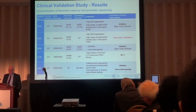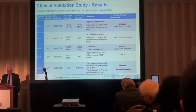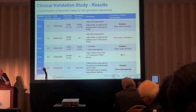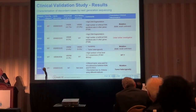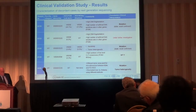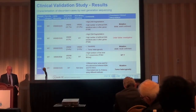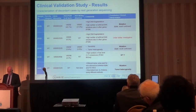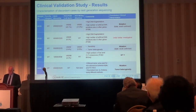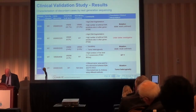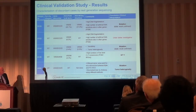Now we come to the five discordant cases. It is important to realize that in all different cases, pyrosequencing identified wild-type while IDYLLA identified a mutation. So the first idea is that IDYLLA is much more sensitive than pyrosequencing — this could be one explanation. We then performed next-generation sequencing using the same material, using the PGM and the MiSeq — and this is really interesting.